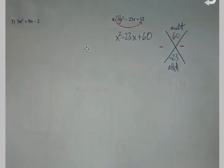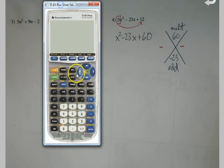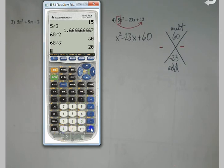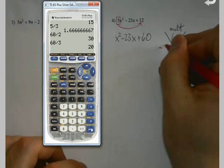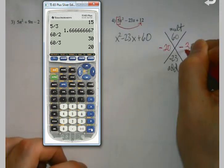60 and 23. About 2. Is 30 and 2 going to get me to 23? No. About 3. Is 20 and 3 going to get me to 23? Yes. 20 and a 3.